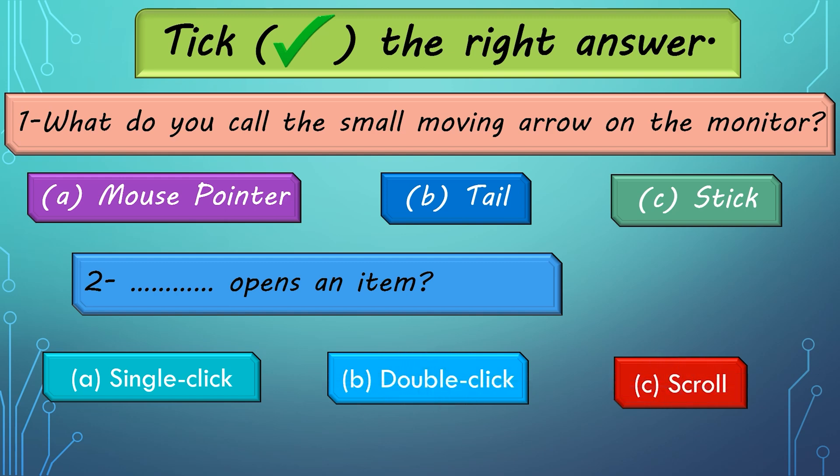Now is the time for correct answers. Number 1: What do you call the small moving arrow on the monitor? Option A. Mouse Pointer. Number 2: Option B. Double Click opens an item.